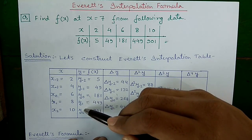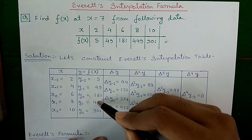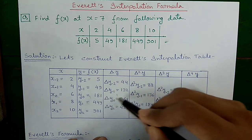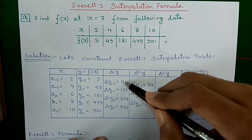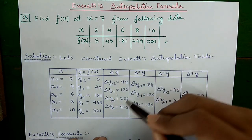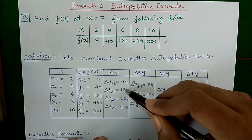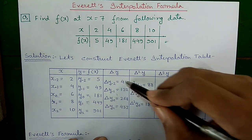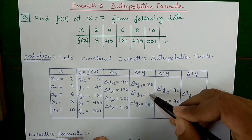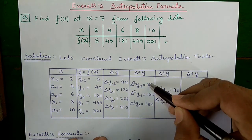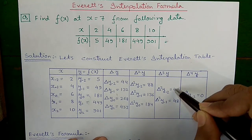To find Δy, starting from the bottom, subtract consecutive f of x values to fill the column. Next, to find Δ²y, starting from the bottom, subtract consecutive Δy values. Then find Δ³y by subtracting consecutive Δ²y values starting from the bottom. Finally, find Δ⁴y starting from the bottom by subtracting consecutive Δ³y values.